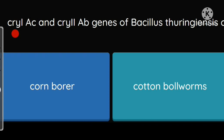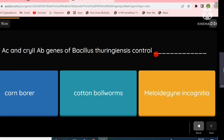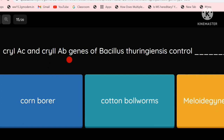The Cry gene is present in the bacterium Bacillus thuringiensis. Cry1AC and Cry2AB genes of Bacillus thuringiensis control which pests? The options are corn borer, cotton bollworms, or Meloidogyne incognita. Both corn borer and cotton bollworms are pests affecting plants. These genes control the cotton bollworms.